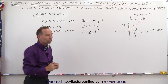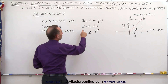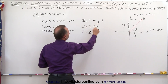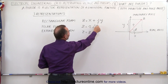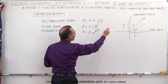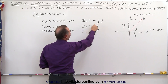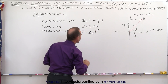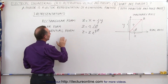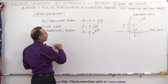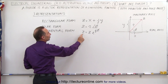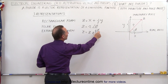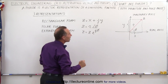We can also represent that in polar coordinates, with R being the magnitude of the vector and phi being the phase angle, so z equals R at angle phi. We can also have the exponential form where z is equal to the magnitude R times e to the j times phi.